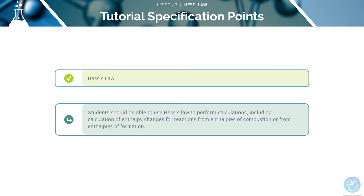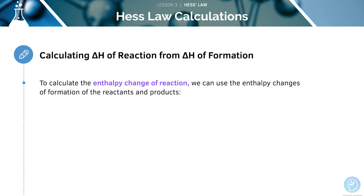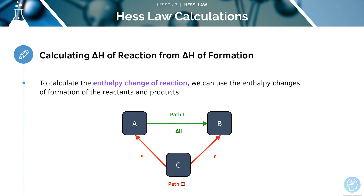Now we'll be looking at performing calculations with Hess's Law, including the calculation of enthalpy changes from reactions. To calculate an enthalpy change, we need to use the enthalpy changes of formation of the reactants and products. If we have the reaction A goes to B, we can form a Hess's triangle. Both the reactants and products involve the exact same elements, so they are formed from the same elements. Therefore, we can write these elements across the bottom, shown here as the letter C, and calculate the enthalpy of formation of the reactants, A, and the products, B.